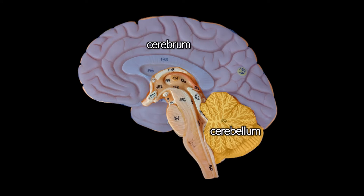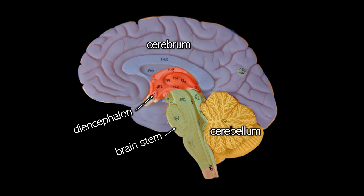You can see the remaining portions that aren't highlighted kind of look like a seahorse, like you're looking at a seahorse from the side. The head and face of the seahorse is the diencephalon, and the neck, body, and tail would be the brain stem.